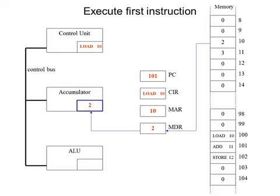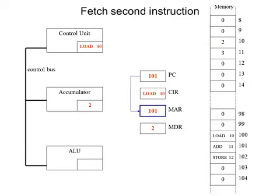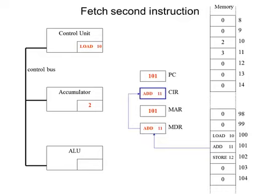Now we're going to fetch the next instruction. The program counter is already pointing to the memory address of the next instruction, so that memory address can be copied from the program counter into the memory address register. We can then take the contents of that memory location and put it into the memory data register. Now it will move into the current instruction register, ready to be decoded. But before we do that, we increment the program counter so it's pointing to the next instruction.